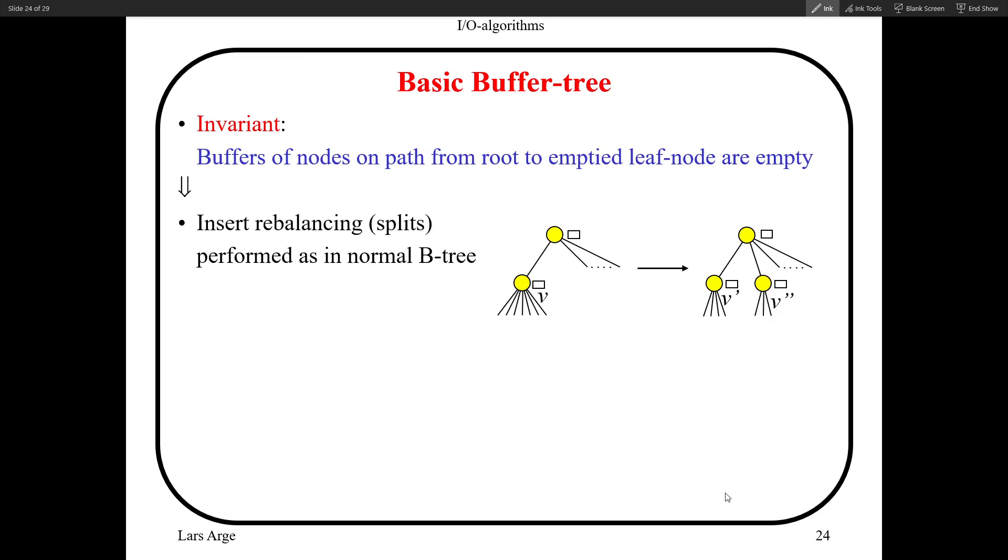One result of this operation is the following invariant: if we have emptied the buffer of this node V, then we have also emptied the buffers of all the nodes that lie on the root-to-leaf path from this node. In other words, if I empty the buffer of V, I have emptied the parent of V, parent of parent of V, and so on.